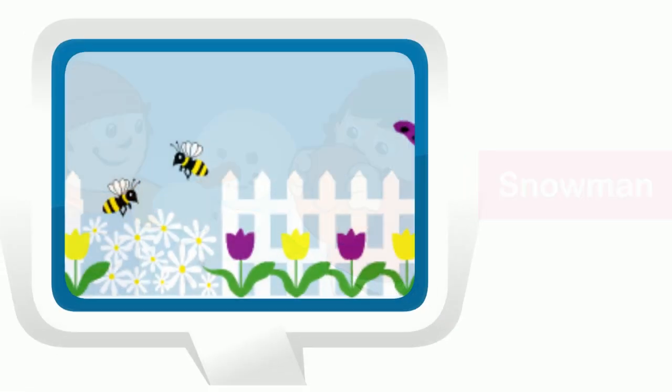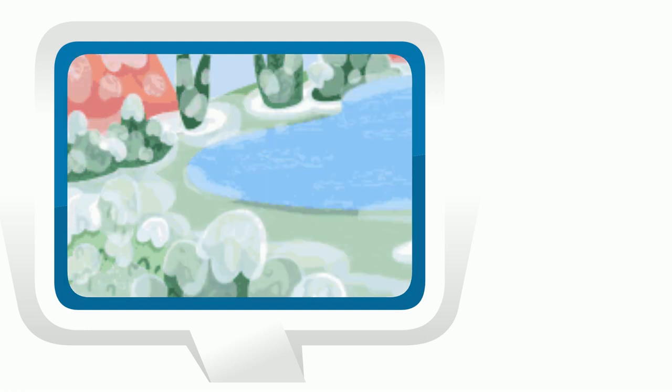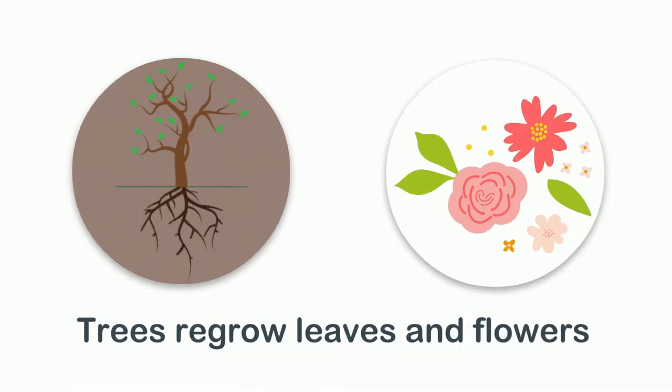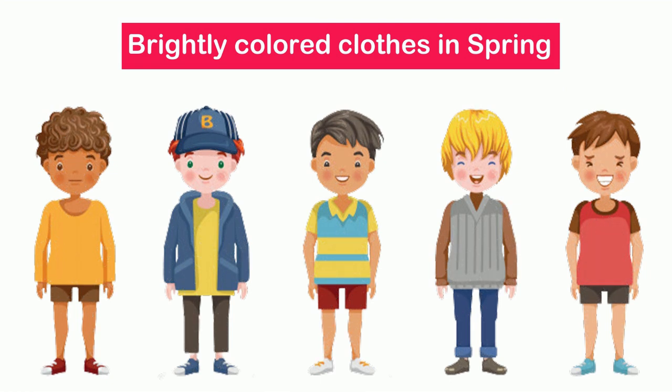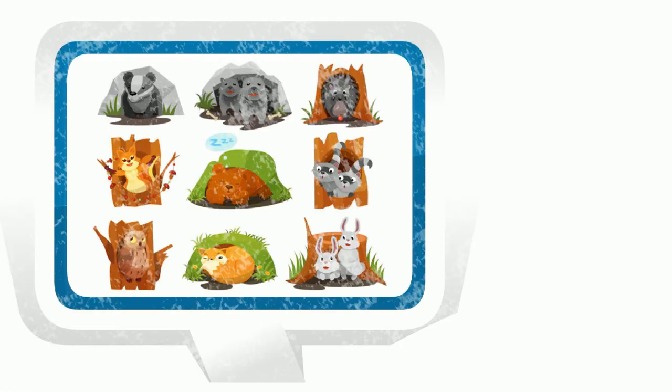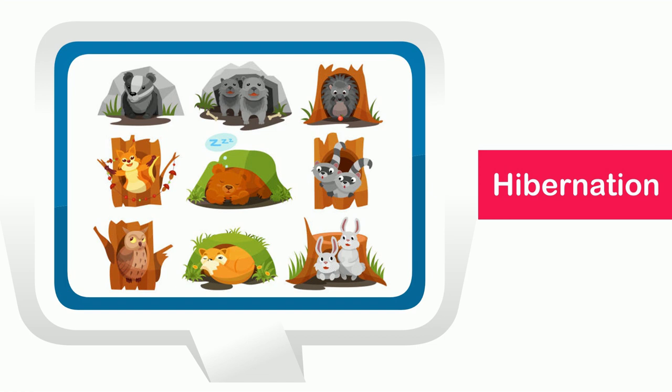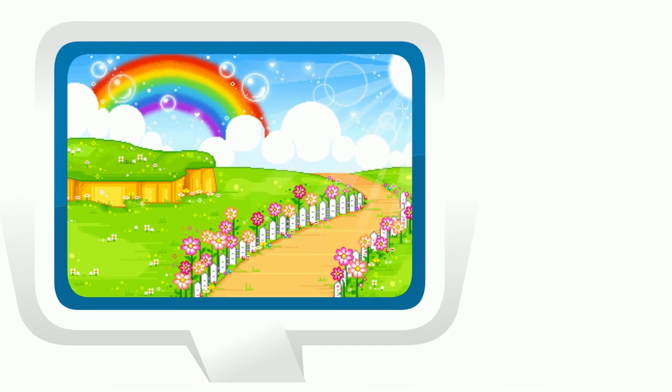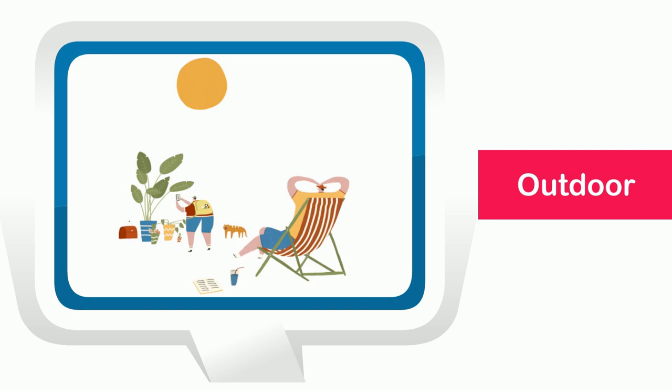Spring comes after winter and is also called the blooming season, as trees regrow leaves and flowers during this time. We wear brightly colored clothes in spring to match the colorful scenery of the trees around us. All animals come out of hibernation and everyone returns to their usual routine. With its bright, colorful, and cheery atmosphere, spring is the perfect time for outdoor parties and activities such as a picnic at a park.